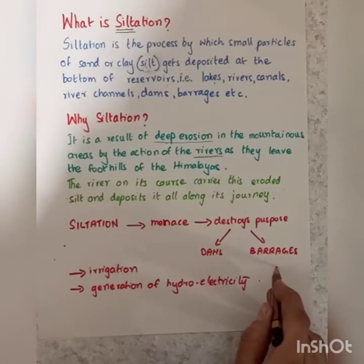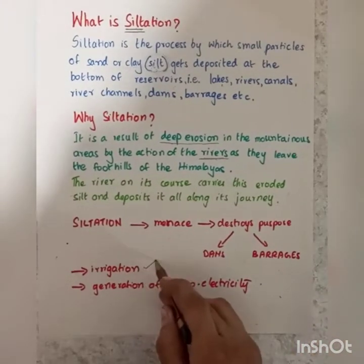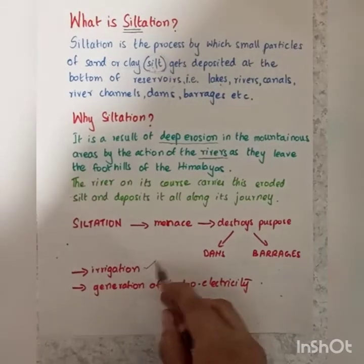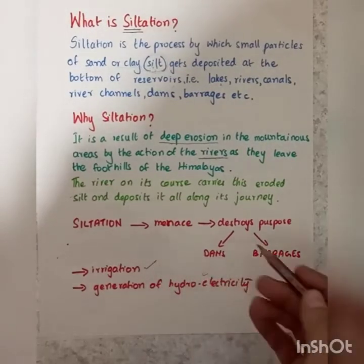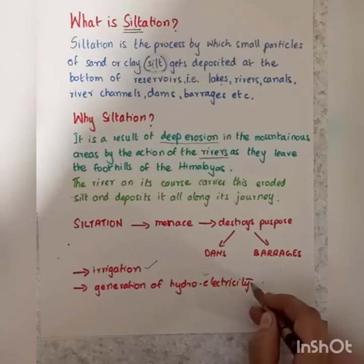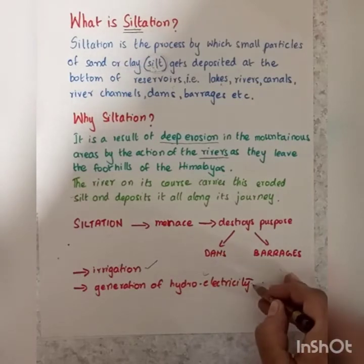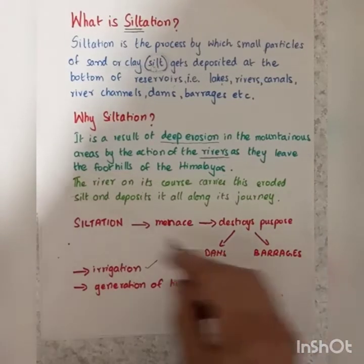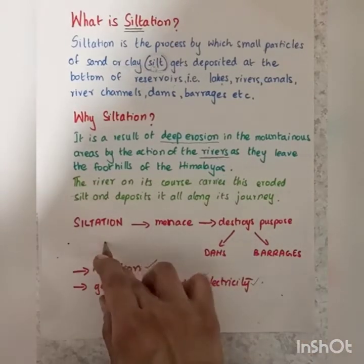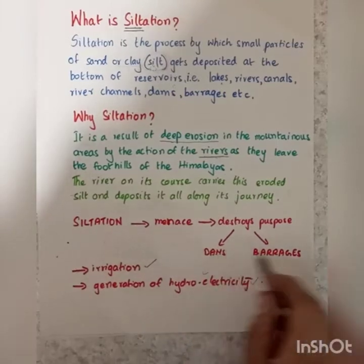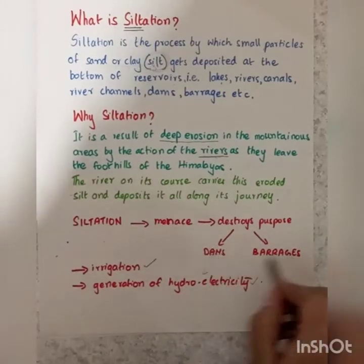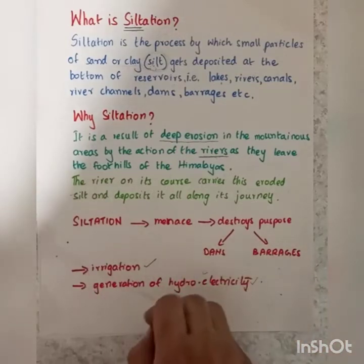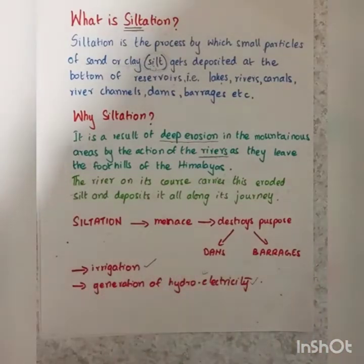Why were the dams and barrages constructed? For the purpose of irrigation. And dams are also constructed mainly for the generation of hydroelectricity. Siltation hampers the purpose of dams and barrages by reducing their capacity, and therefore it is something which needs to be checked.